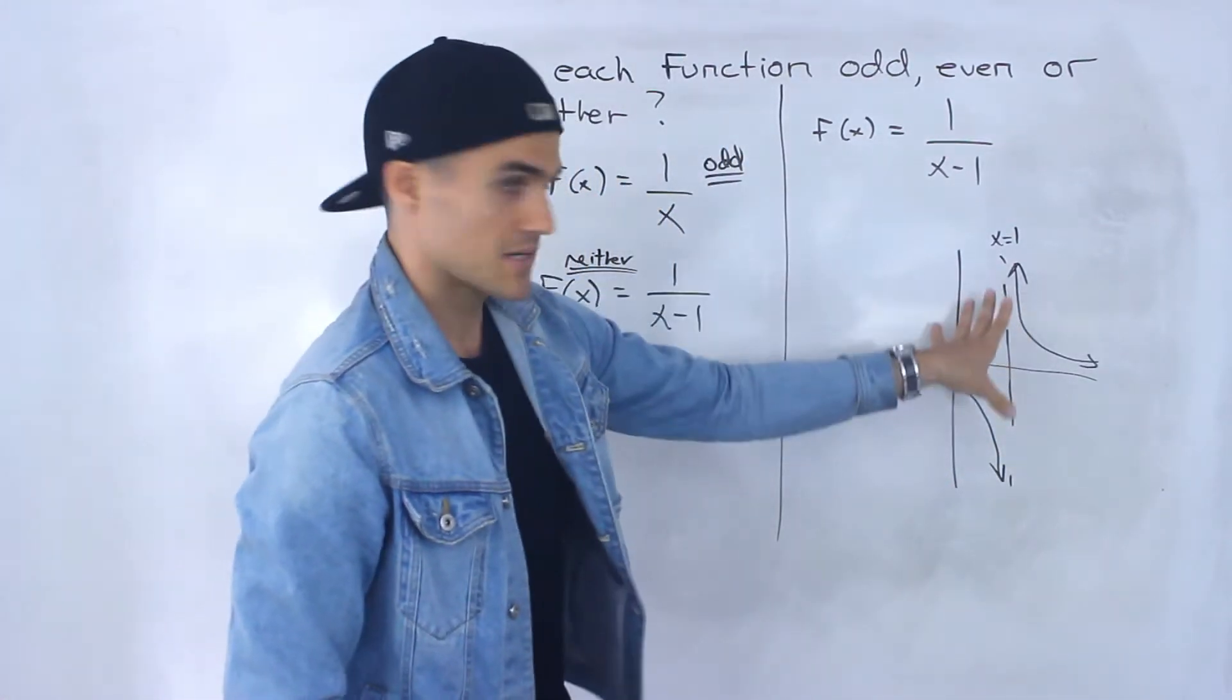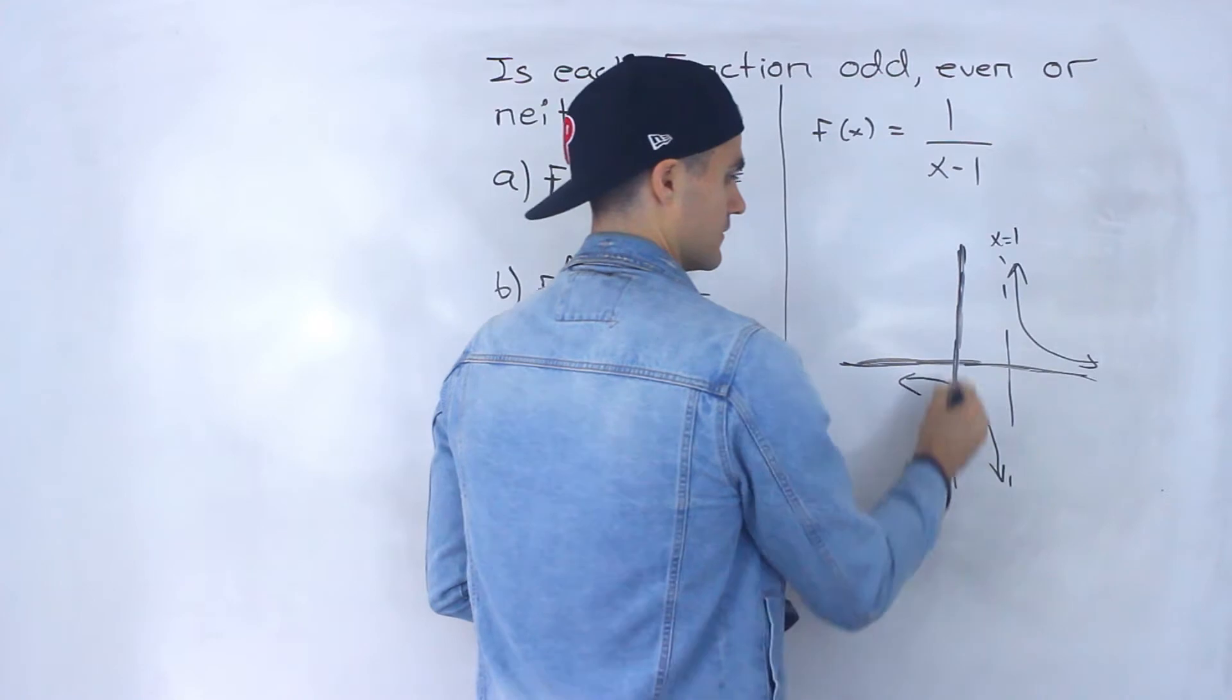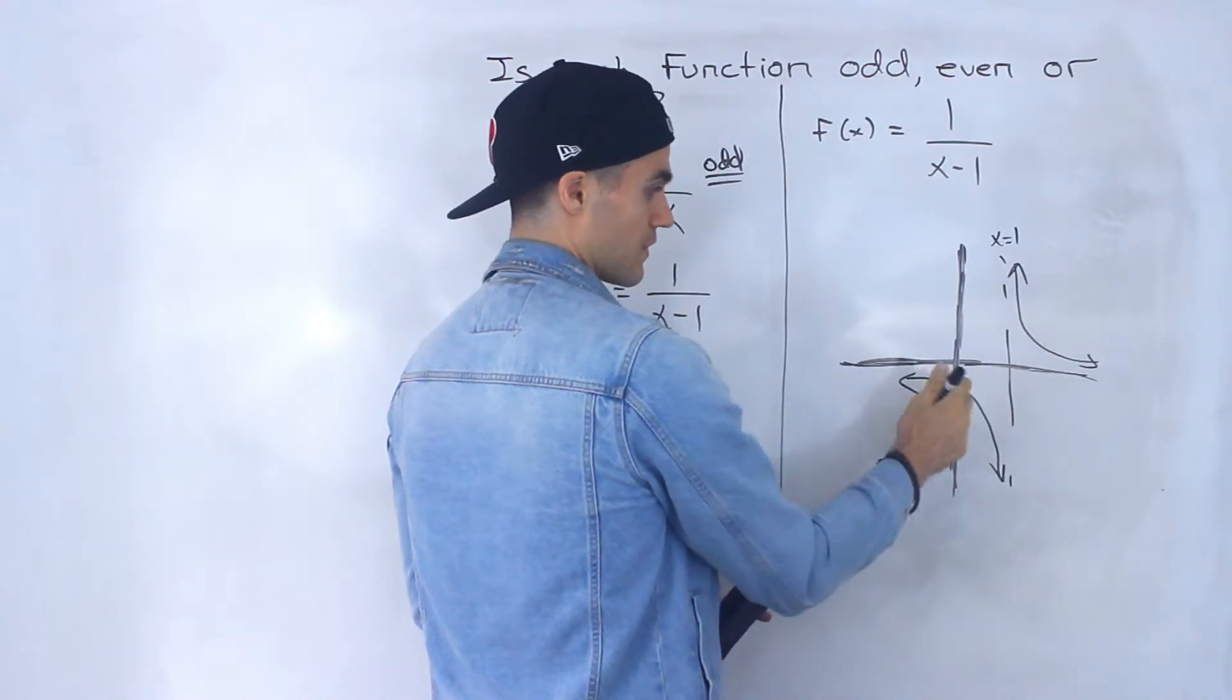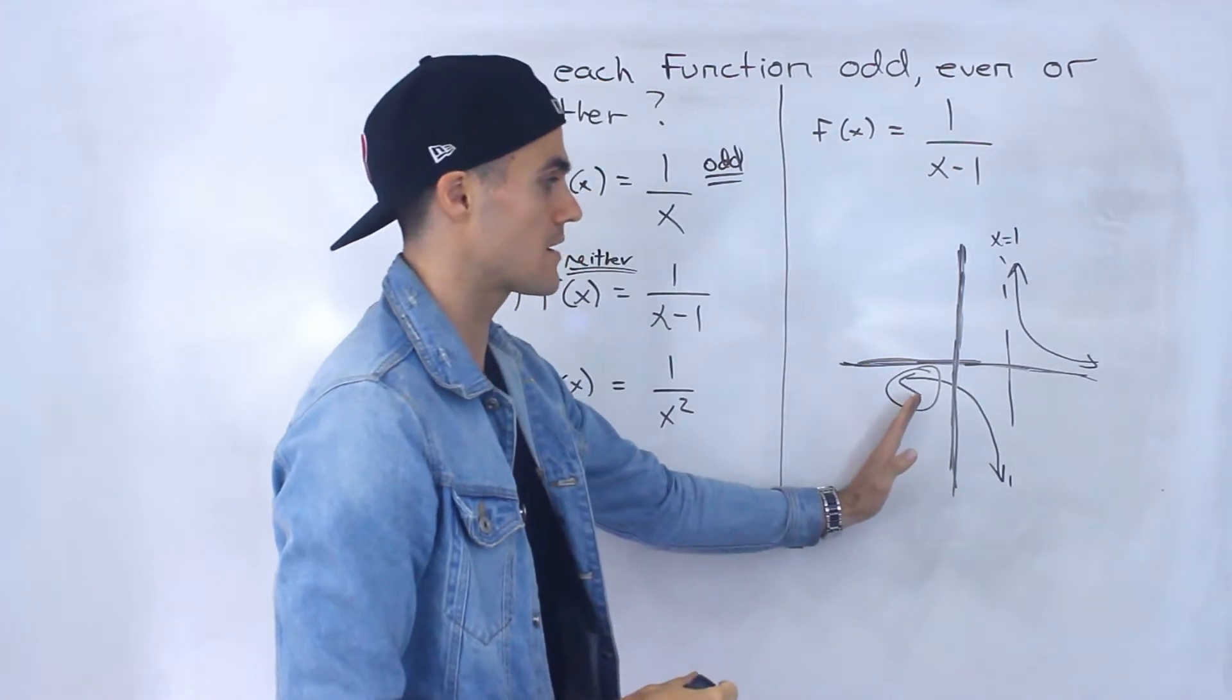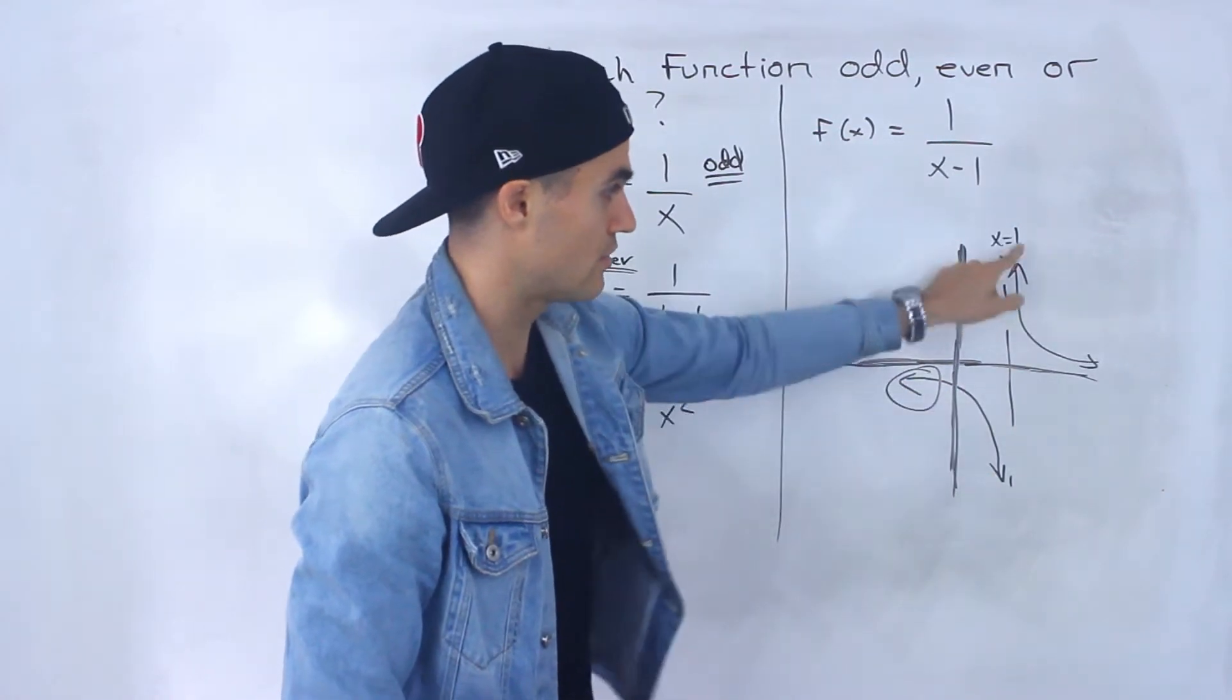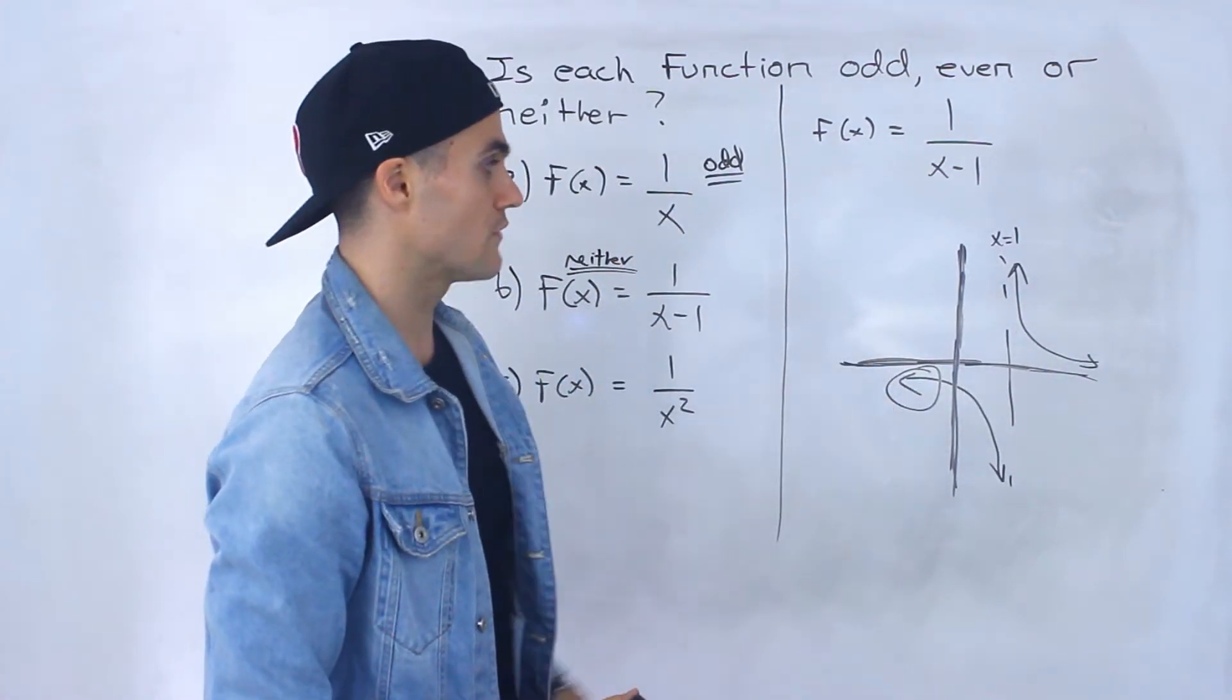And notice it doesn't have point symmetry, right? It has to have symmetry along these axes here. Right? So notice if I take this and reflect it in the y-axis, right, we're not going to end up with this portion. This is the portion to the left of the y-axis. If I take this and reflect it, I'm not going to end up with that. Or if I take all of that to the right of the y-axis and reflect it, I'm not going to end up with that. So it's obvious it's not even.